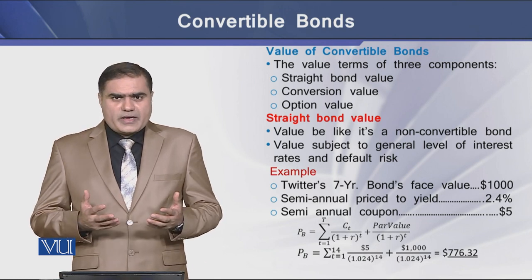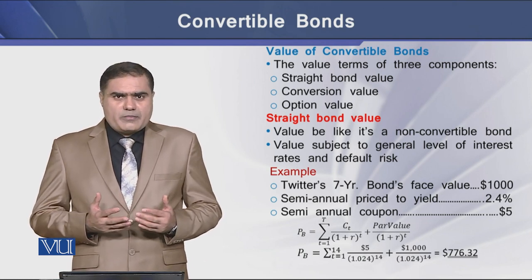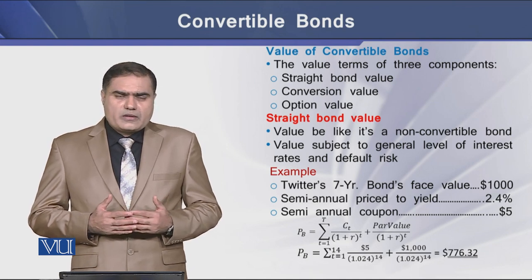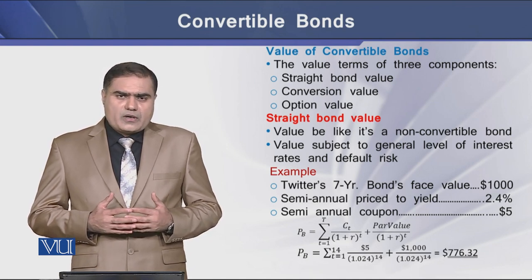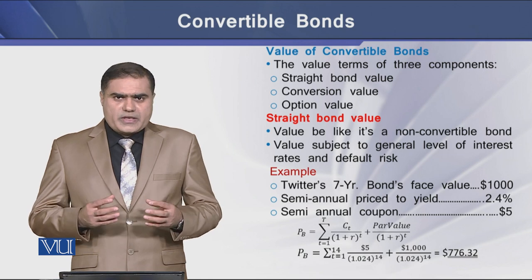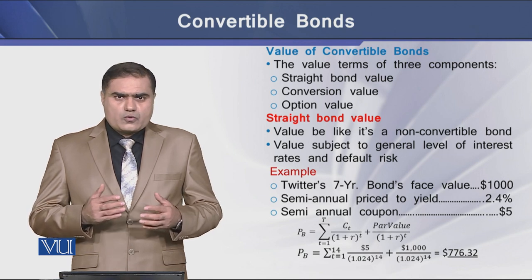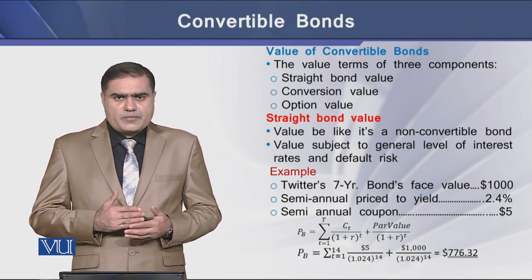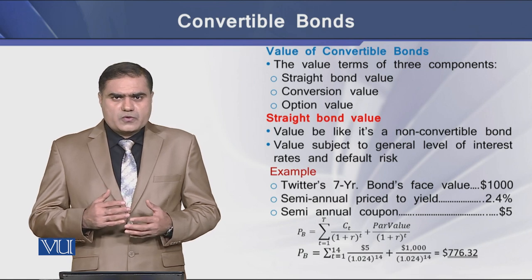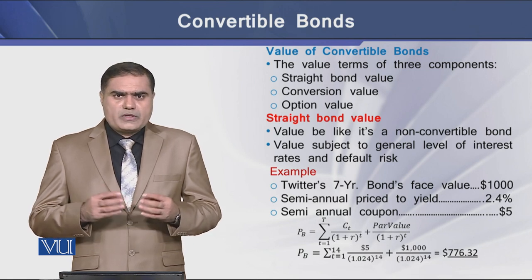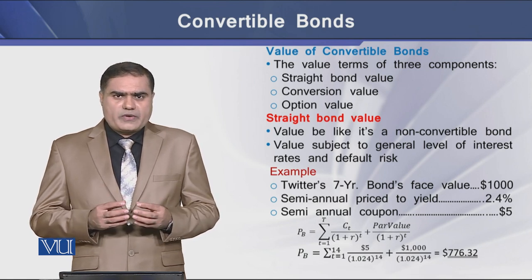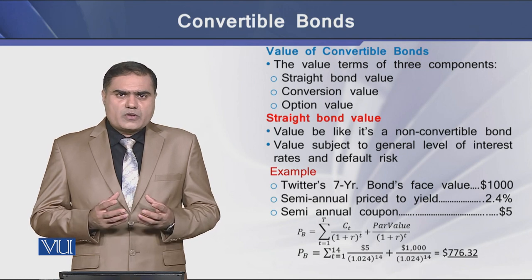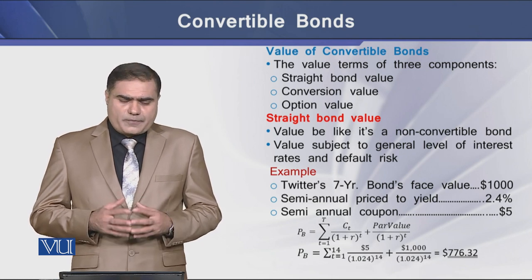The straight bond value is determined as usual: the present value of coupons on a bond plus the present value of its face value. The sum of these two present values determines the overall present value of a particular straight bond.